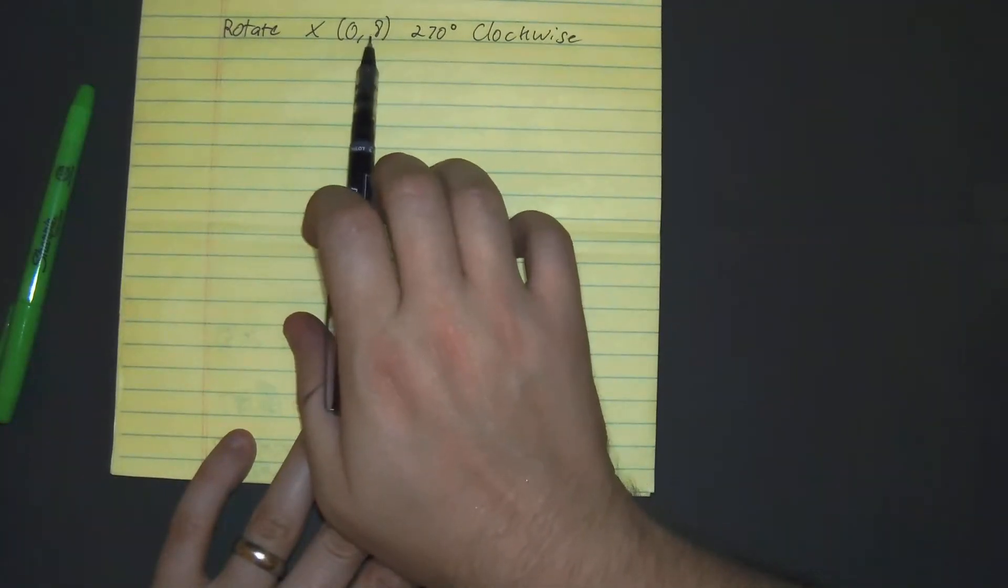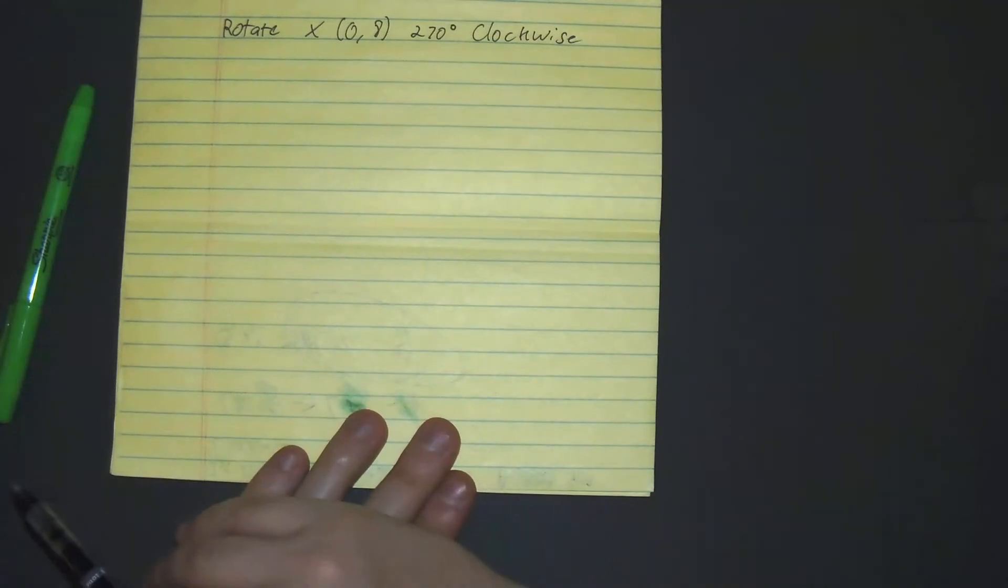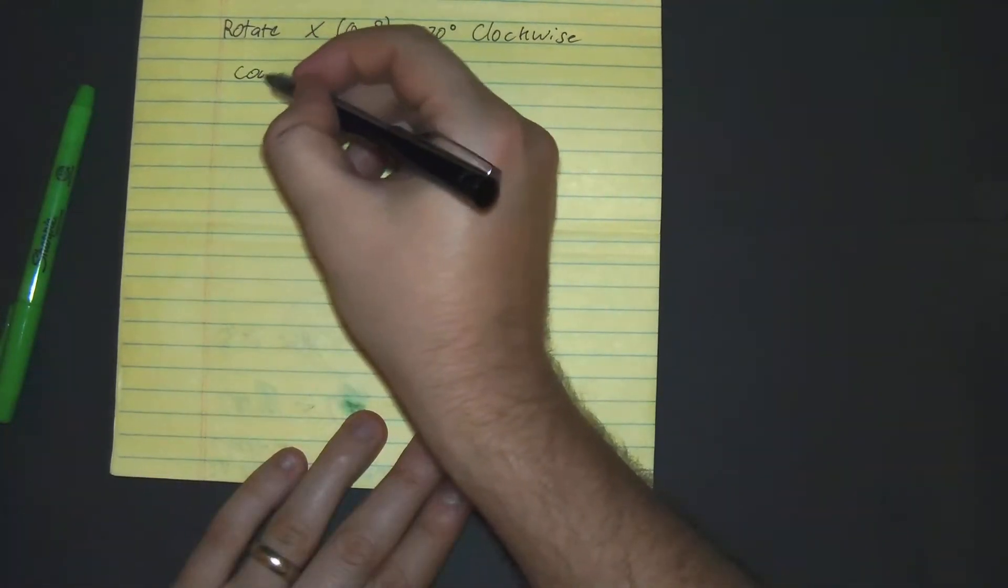Rotate x, 0, 8, 270 degrees clockwise. Okay, so we're going to be doing this in coordinate notation.